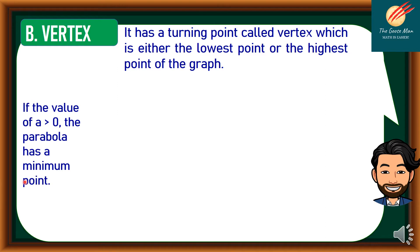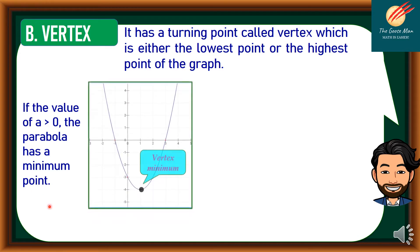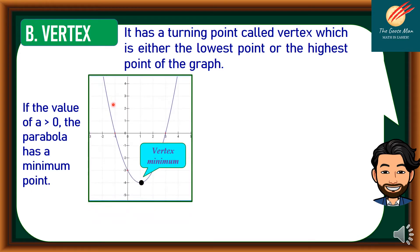if the value of a is greater than 0, meaning positive, the parabola has a minimum point. So this is the illustration — this is the vertex, which is the minimum.